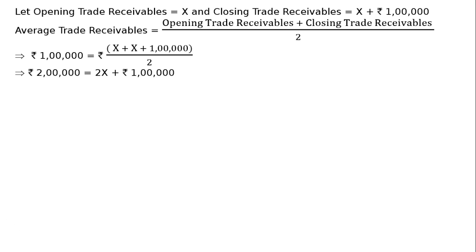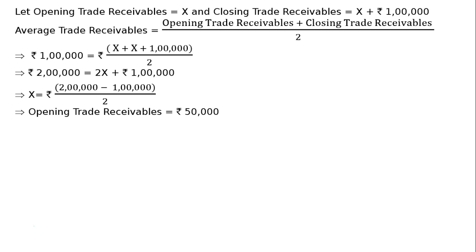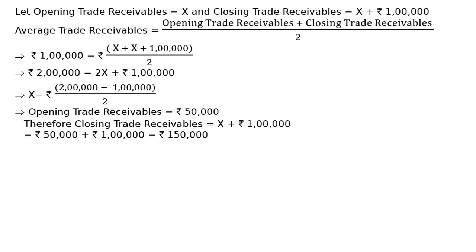So: (x + x + rupees 1 lakh) divided by 2 = rupees 1 lakh, which gives 2x + rupees 1 lakh = rupees 2 lakh, therefore x = rupees 50,000. Opening trade receivables = rupees 50,000 and closing trade receivables = rupees 50,000 + rupees 1 lakh = rupees 1 lakh 50,000. This completes Case 1.